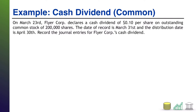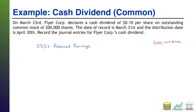We start off with March 23rd. On that day, the company declares a cash dividend. Once the company has declared a dividend, it is obligated to pay it out and must record a liability to represent the future cash payment. Dividends come out of retained earnings, so we will debit retained earnings. The dividend was 10 cents per share on 200,000 shares, which works out to $20,000 total. Therefore, that is the amount that comes out of our retained earnings, and we create a dividends payable for that $20,000.